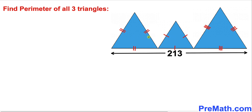Let me go ahead and label these triangles. This first one, the medium one, I'm going to call this triangle one. This smallest one I'm going to call triangle two, and this largest as triangle three. Now let me label triangle one's side length as A. Since we are dealing with an equilateral triangle, all three sides are going to be A. Likewise, the smallest triangle two has side length B, and since it's equilateral, all sides are B.